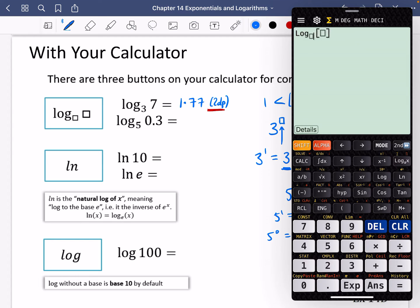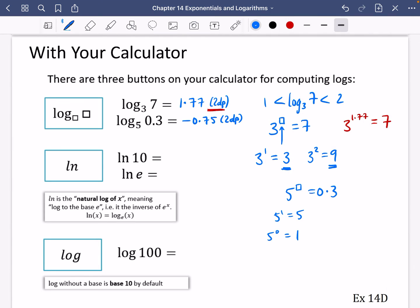Let's see what it is, though. So I'm going to type this in, I'm going to put the base is 5, and I'm going to put 0.3, and I get negative 0.75 to two decimal places. So we can have these negatives coming out of logarithms, you just can't put negatives into logarithms.